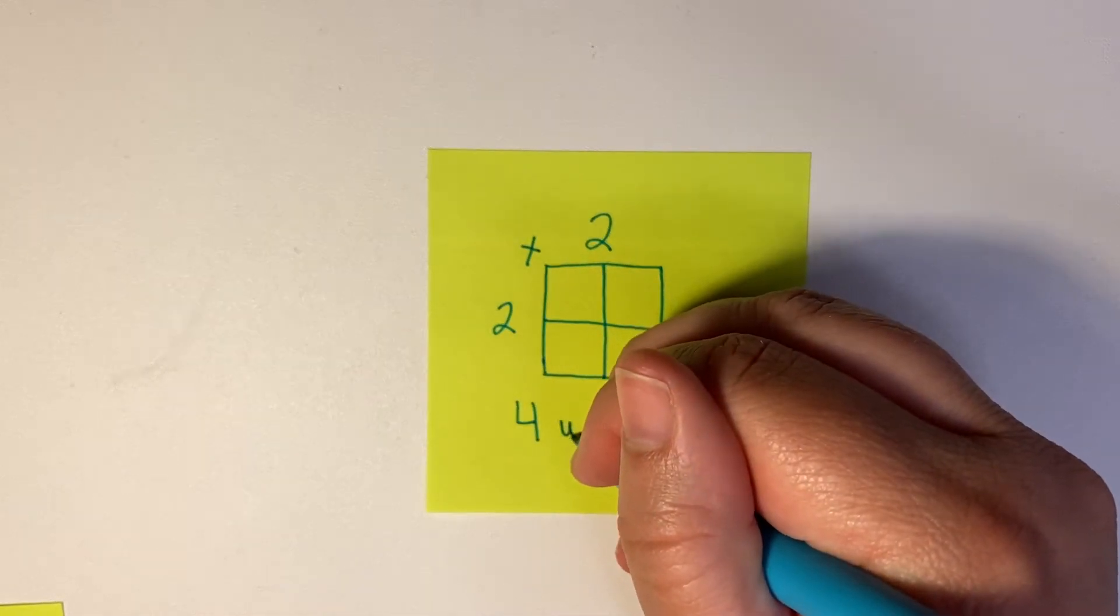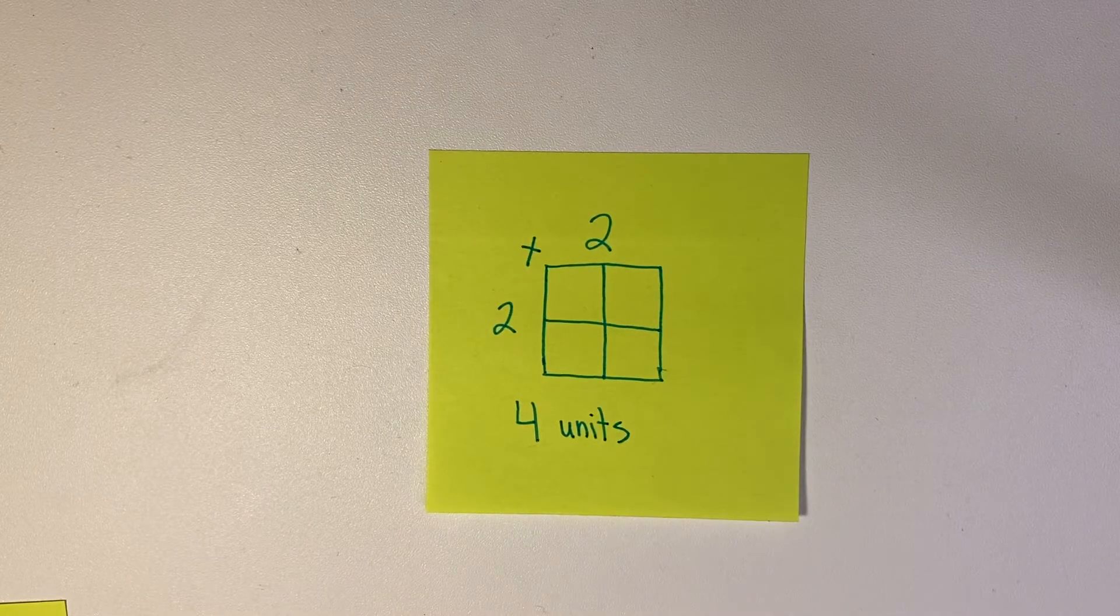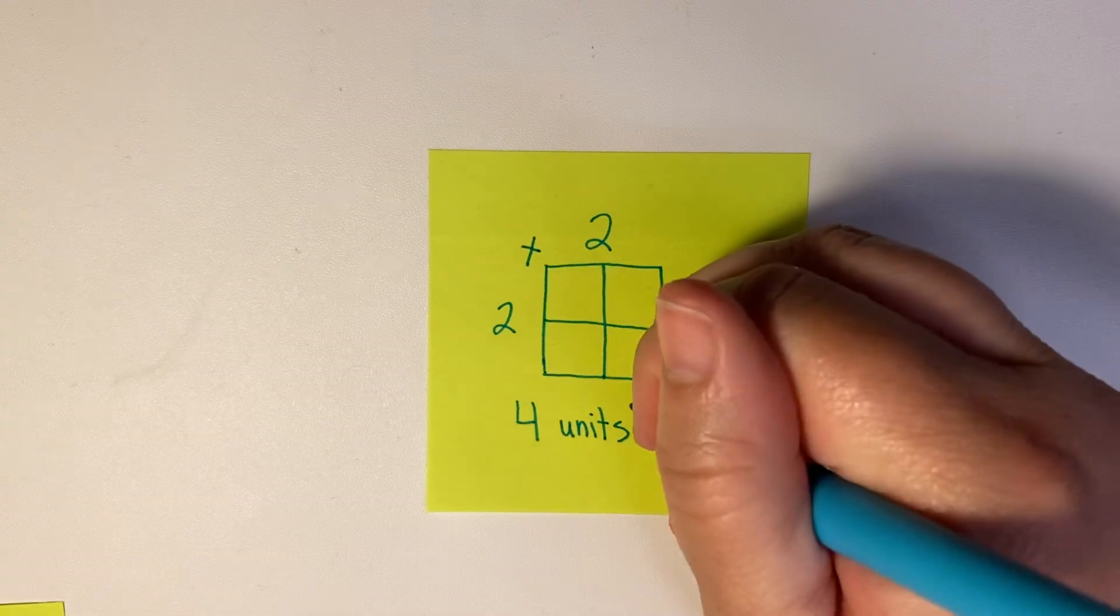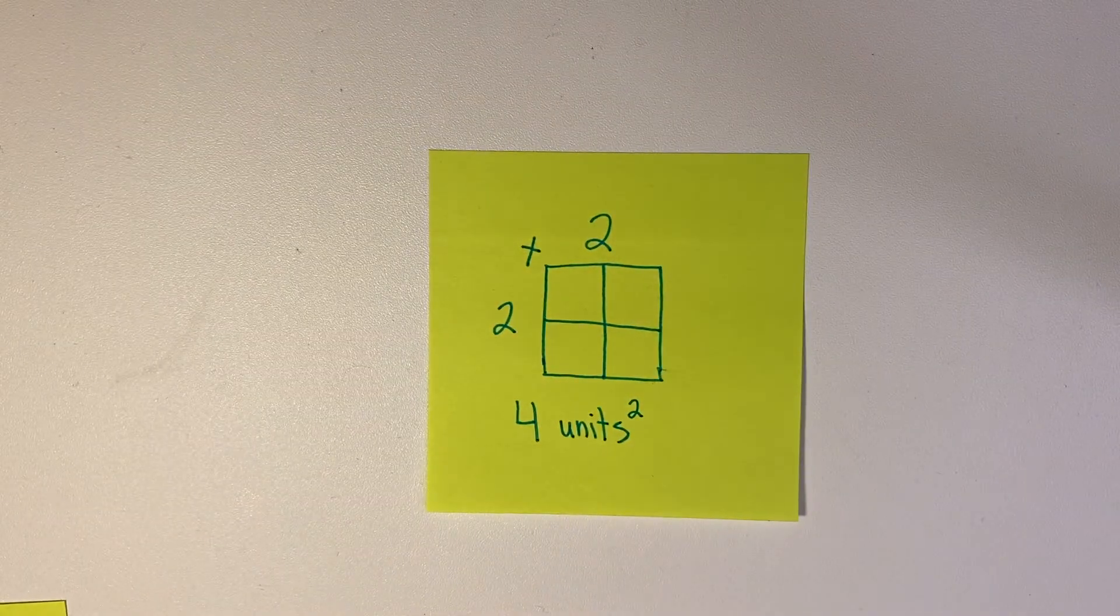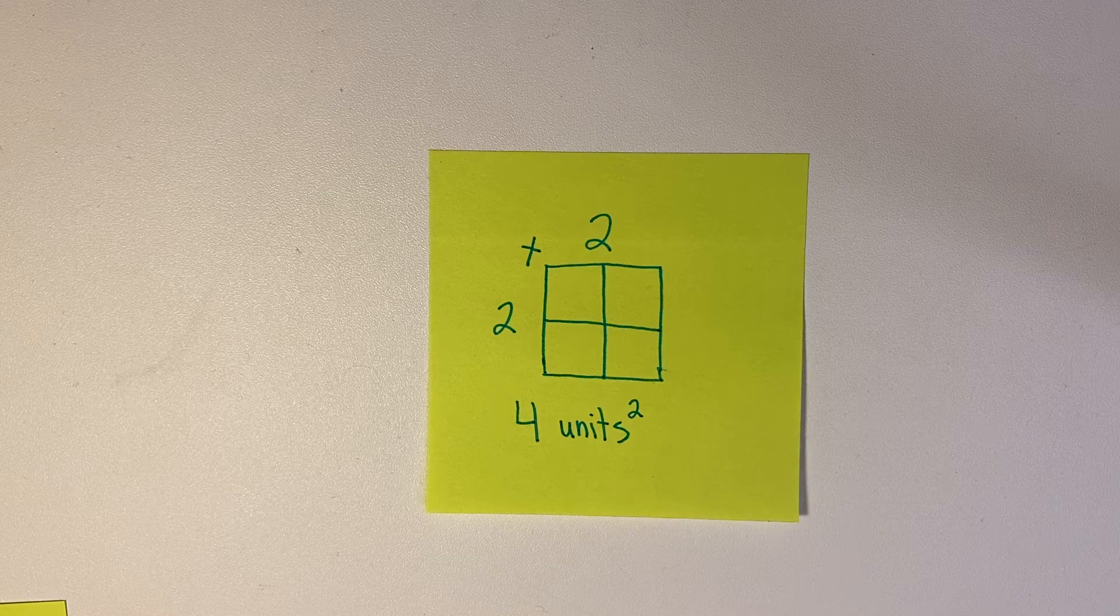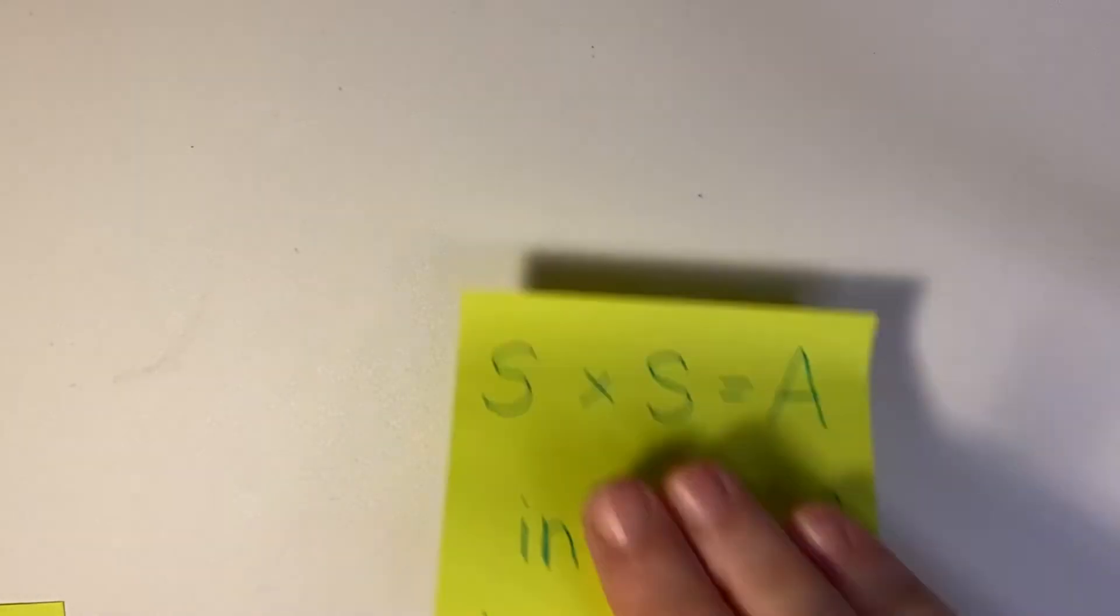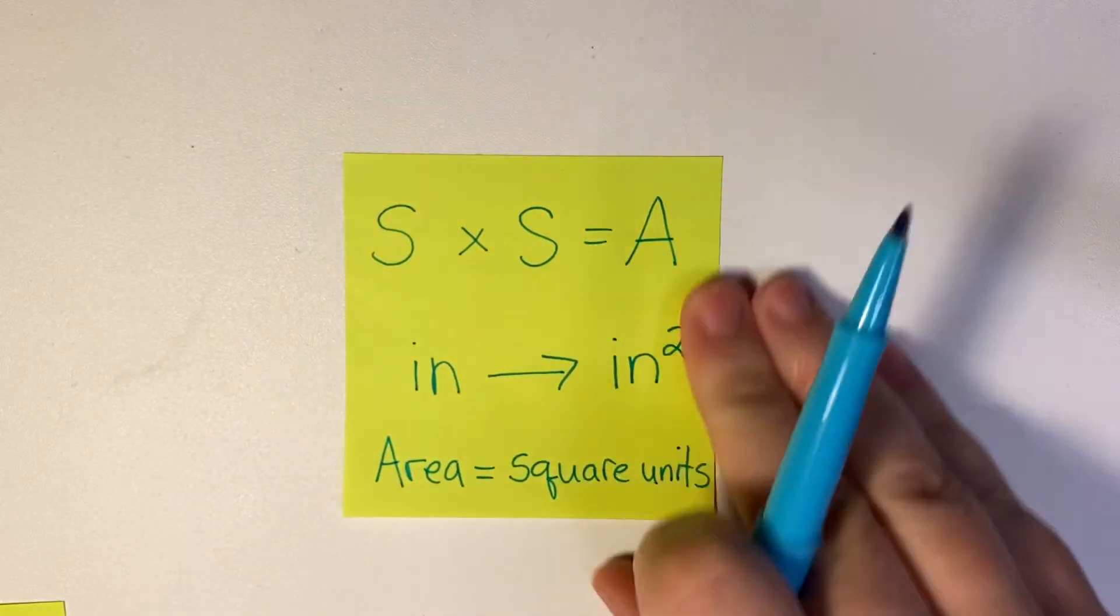Whatever the unit is, I'm just going to say 'units,' and we will say 'squared.' That little two raised up like that says 'squared,' so this is four units squared.